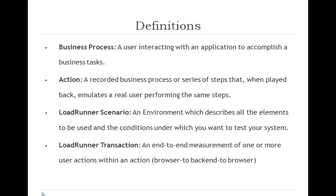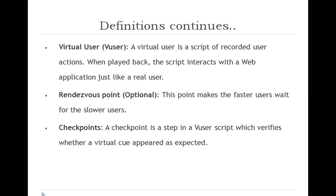A LoadRunner transaction is when actions and their responses are measured in terms of time by enclosing them in a function — this is called a transaction. In the above example, launching Gmail and hitting the login button are examples of transactions. A virtual user is the script created by VuGen that captures user actions and performs the same when played back. A rendezvous point is used to perform a task simultaneously — for example, 20 users wanting to hit the login button at the same time. Checkpoints are verification points to confirm the virtual user is performing as expected.